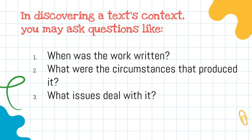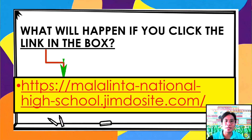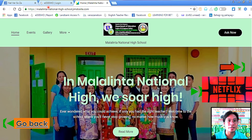In discovering a text's context, you may ask questions like: when was the work written, what were the circumstances that progressed it, and what issues does it deal with? What will happen if you click a link in a box? Upon clicking it, we will jump to the resource — particularly the website shown on the next slide. The website of the link is malalintanationalhighschool.jimdosite.com.